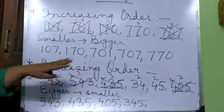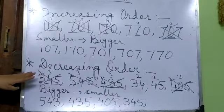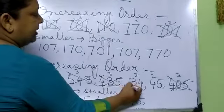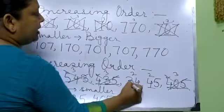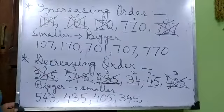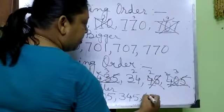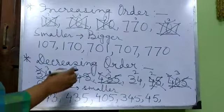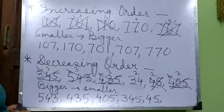Now all the 3-digit numbers are finished. We will go to the 2-digit numbers. Here the first digit is 3, and here it is 4. So 4 is bigger than 3, so the bigger number will be 45. Now what is left? 34 is left, so it will be the smallest number.